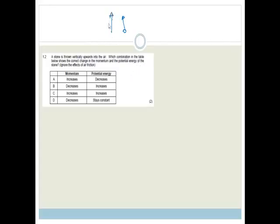A stone is thrown vertically upwards into the air. Which combination in the table below shows the correct change in momentum and the potential energy of the stone. Do you agree that as we go up, the potential energy is going to increase? Because the further we go up, the further we get to come down again. So the potential energy is going to increase. So therefore, we can eliminate those two options.